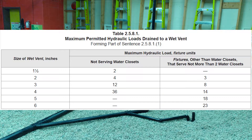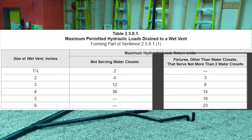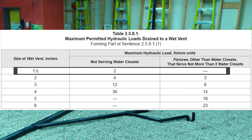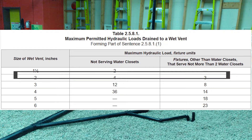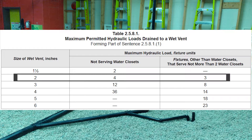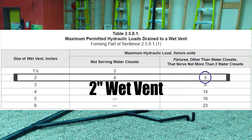Let's reference Table 2581 now. We are serving a water closet, so we're going to look down the right-hand column. If I go down to one-and-a-half inches, I'll notice there's a line through there — that means when I have a wet vent serving a water closet, I may not ever use one-and-a-half inches; it's too small. Going down one line to two inches, it says you can use up to three fixture units on a two-inch wet vent serving a water closet. Therefore, we will be using a two-inch wet vent for our example.